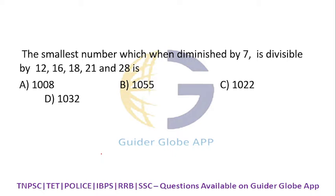The smallest number which when diminished by 7 is divisible by 12, 16, 18, 21, and 28. If you take the LCM for this, you will get 1008. As a method I have already taught in the previous sum. For the alternate shortcut method, from 1008 you subtract seven.